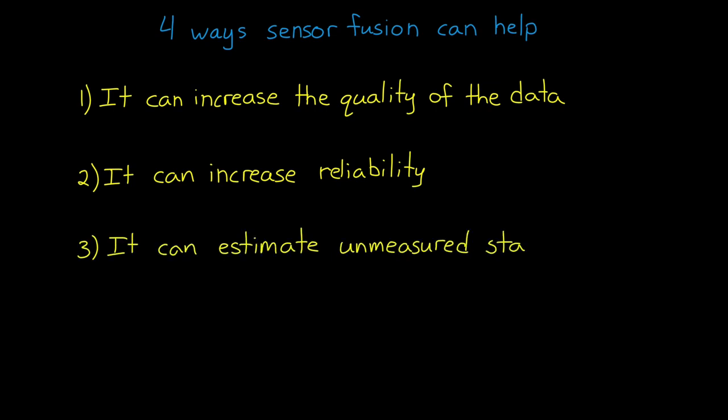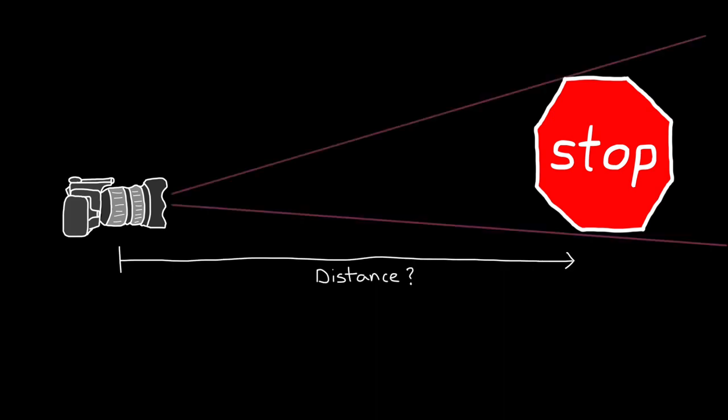The third benefit of sensor fusion is that it can be used to estimate unmeasured states. Now, it's important to recognize that unmeasured doesn't mean unmeasurable. It just means that the system doesn't have a sensor that can directly measure the state we're interested in. For example, a visible camera can't measure the distance to an object in its field of view. A large object far away can have the same number of pixels as a small but close object.